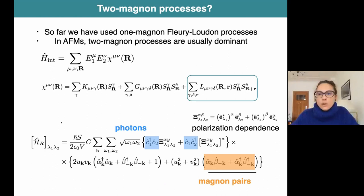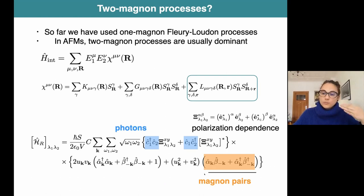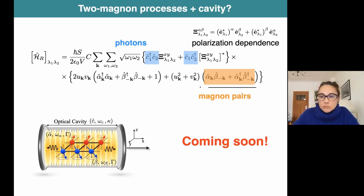As a final thought: we have so far considered only one-magnon processes, but actually in antiferromagnets two-magnon processes are usually dominant. We need to consider higher-order terms in the correction to the permittivity. This will give rise to a Hamiltonian in which photons in the cavity can generate magnon pairs - this is a true stimulated Raman scattering for magnons. We are investigating the dynamics of this magnon pair generation together with the cavity physics.